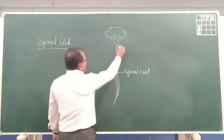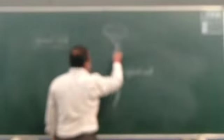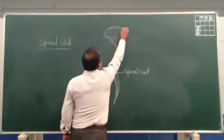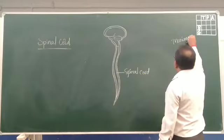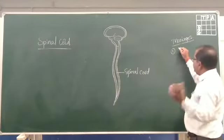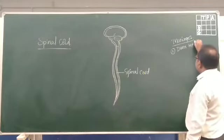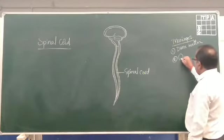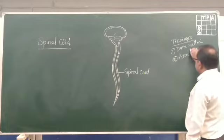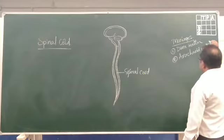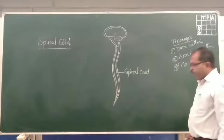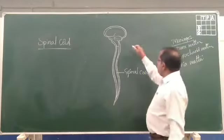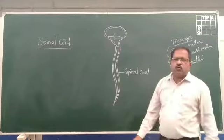The spinal cord, as the brain, is covered by three layers. The same way the spinal cord is also covered by three layers. The three layers: the first one, the outermost layer is called the dura mater. The middle layer is called the arachnoid mater. And the innermost layer is called the pia mater. These three membranes are present around the brain, and those three layers are also present around the spinal cord.